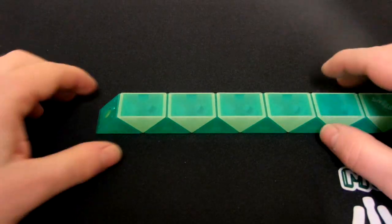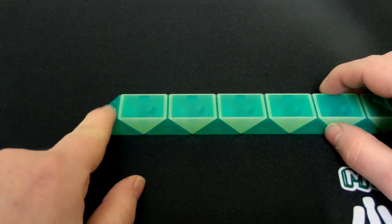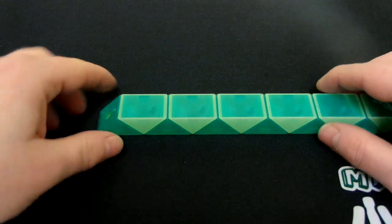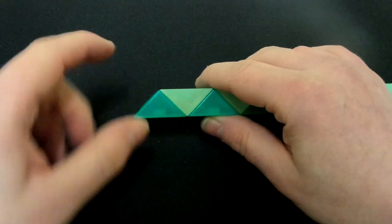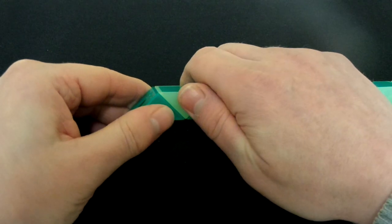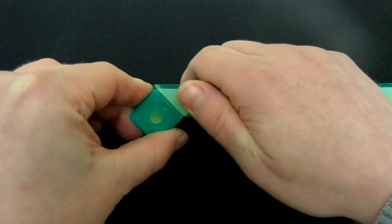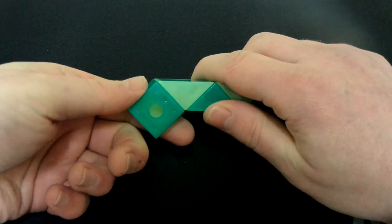So you need to start off with your snake lined up like this where this end piece is sloped like that. And you take this first piece and you turn it towards you and then you turn it down.